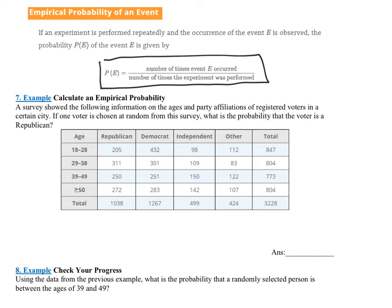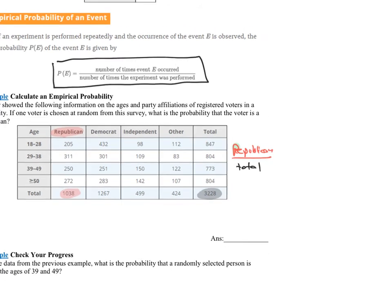What we want to do is consider the Republicans. How many Republicans are there? Well, it looks like there's a total of 1,038 Republicans. That's what we want. What we want is Republican. And then what we have to divide that by is the total. If I look here, what's the total number? Well, if I go on the bottom right corner, I see that the total number is 3,228.